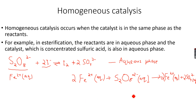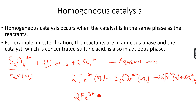The Fe³⁺ ions produced in this reaction will react with the iodide ions. In the first reaction, the Fe²⁺ ions are oxidized to Fe³⁺ and the S₂O₈²⁻ ions are reduced to SO₄²⁻ ions. Then the Fe³⁺ ions react with the iodide ions, which are also aqueous.